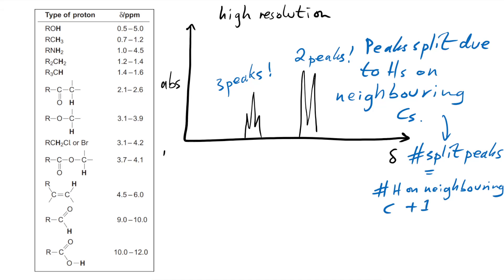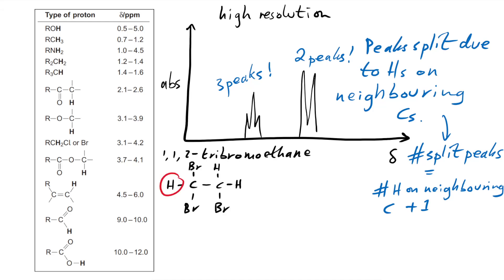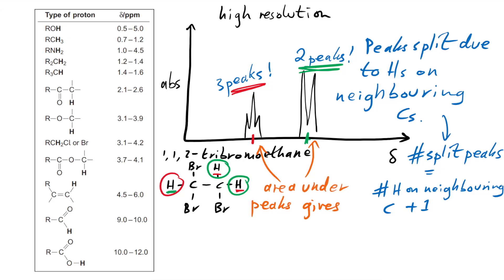For example, let's look at 1,1,2-tribromoethane. Looking at the single hydrogen on one carbon: how many hydrogens are on the neighbouring carbon? There are two. So we should have three peaks — that's the n+1 rule. Conversely, the two hydrogens on the other carbon have one hydrogen on their neighbouring carbon, so we get two peaks. Because the peaks are split, instead of just the height we take the area under the peaks, which gives relative absorption. We have two hydrogens on the right and one on the left, so the area should be two for one and one for the other.